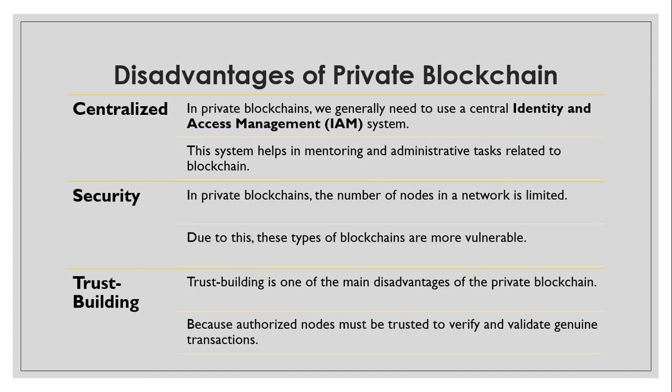The first disadvantage of private blockchain is its centralized approach. Private blockchains generally require a central identity and access management system for monitoring and administrative tasks, which causes the decentralized aspect to be lost. The second disadvantage is security — with fewer nodes, private blockchains are more vulnerable. The third disadvantage is trust building, as authorized nodes must be trusted to verify and validate genuine transactions.